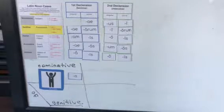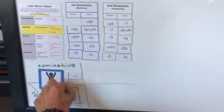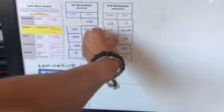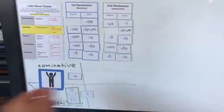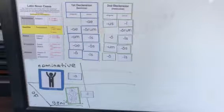And Dei. Dei. That's going to be your singular genitive. That translates into victory of God or God's victory.